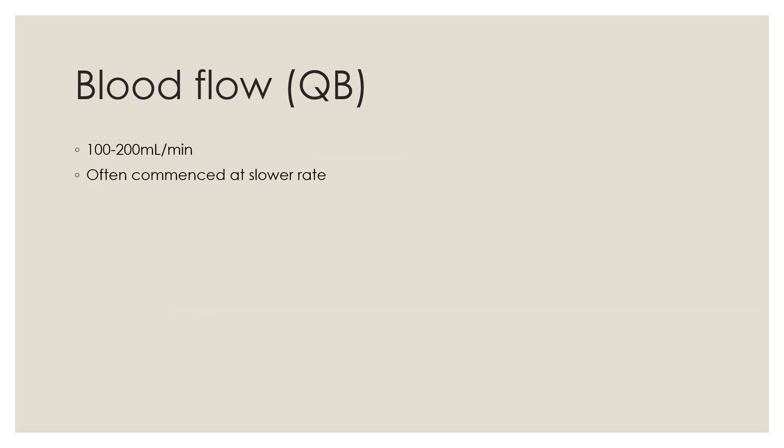The typical blood flow in CRRT is between 100 to 200 ml per minute. CRRT is commenced at a slower rate, then incrementally stepped up to ensure tolerance. Blood flow rate is usually kept lower while using citrate anticoagulation in view of higher risk of citrate toxicity. Among patients with no anticoagulation, a higher blood flow rate of 250 to 300 ml per minute may be required to maintain catheter patency and CRRT circuit life.